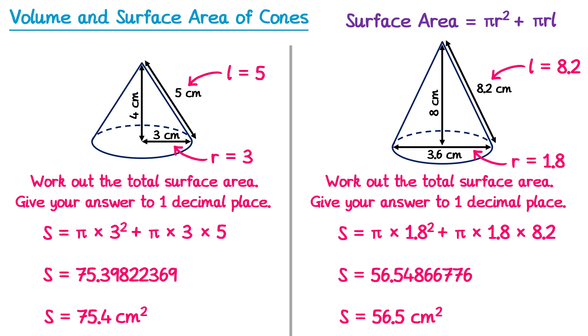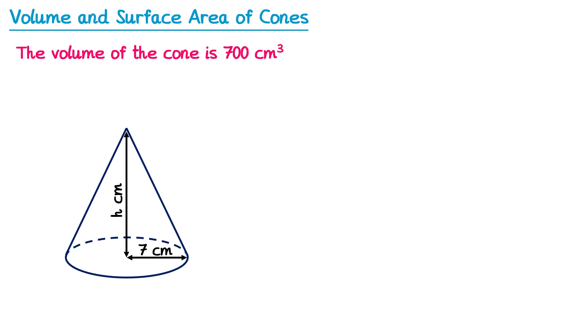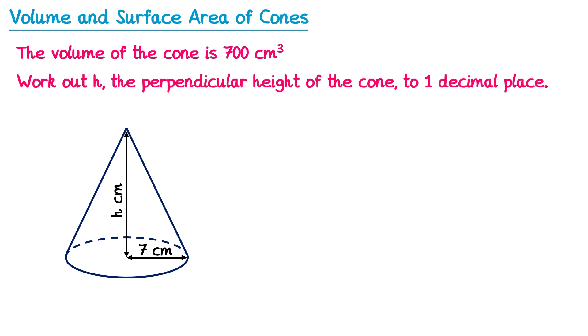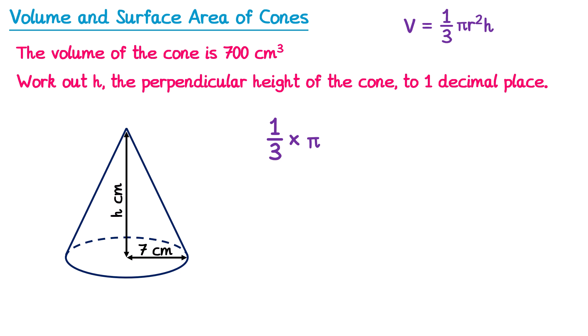Now let's look at some trickier questions. For this cone, the volume is 700 centimetres cubed but we haven't been given h — the question wants us to work out the perpendicular height to one decimal place. We use the volume formula: 1/3 × π × r squared × h. The radius is 7, so 1/3 × π × 7 squared × h = 700. Typing the left-hand side (excluding h) into the calculator gives 49π/3.